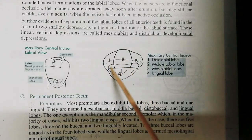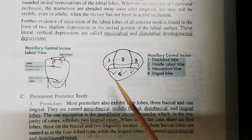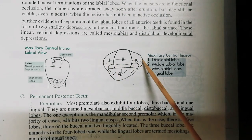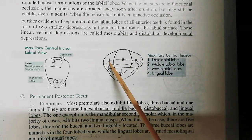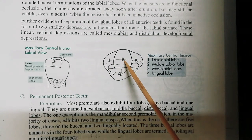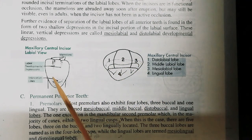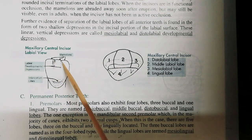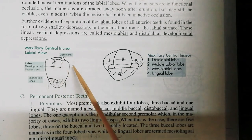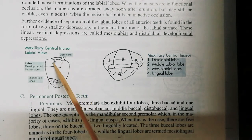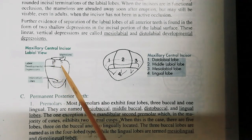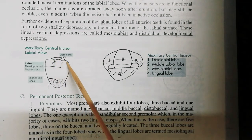In this diagram you can see the superior or incisal aspect of a maxillary central incisor. If this is the distal surface and this is the mesial surface, then this is the distolabial lobe, this is the middle labial lobe, this is the mesiolabial lobe, and this is the lingual lobe. Here you can see the labial aspect of a maxillary central incisor — these are the developmental depressions. This is the mesiolabial developmental depression, this is the distolabial developmental depression, and here on the incisal edge are the mamelons.